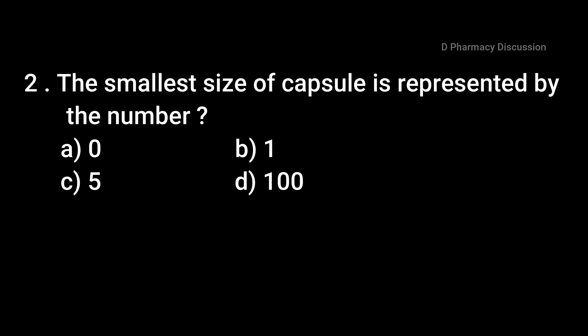Examples for internal semi-solid dosage forms are suppositories and pessaries. Question 2: The smallest size of capsule is represented by the number. Option A: 0, B: 1, C: 5, and Option D: 100. Correct answer is Option C, that is 5.